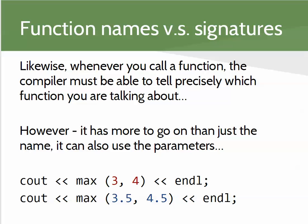For instance, with a cout statement calling a max function from the cmath library, there are actually many max function calls — some take integers, some take doubles. If you call max with two integers, the compiler finds the version that accepts two integers and returns an integer. Likewise it can find the correct version that accepts doubles. The parameter types are different, and the type of a parameter is considered part of the function signature. The name and the parameters together form the signature.